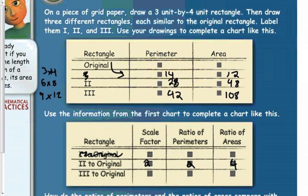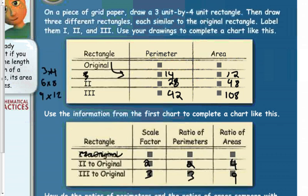From the original to the third figure, that's 3 times the dimensions. It's also 3 times the perimeter, but the area is 9 times bigger — the scale factor squared again. And it's those patterns that we're going to use to compare scale factors and the ratios of perimeters and areas in this section.